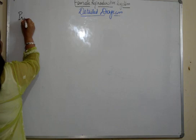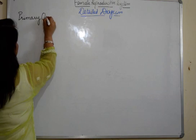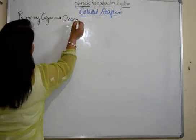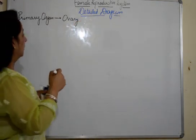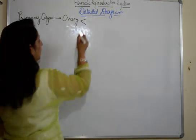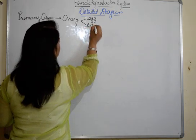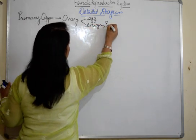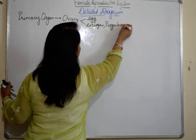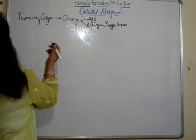If I say the only primary organ — as in the case of males it was testes — in the case of females it's the ovary. So ovary is the primary organ, because it's going to perform the main functions: that is formation of egg or ova, and secretion of estrogen and progesterone. That is why it is the primary sex organ.